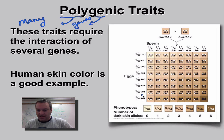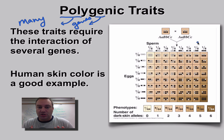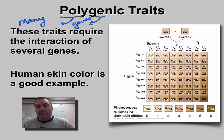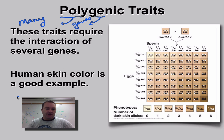Look at the size of this Punnett square — it has 64 boxes, and these individuals produce eight different gametes. You're more than welcome to do a 64-box Punnett square, but that's way too difficult and makes it too easy to make a mistake. So we're going to use the laws of probability to our advantage.